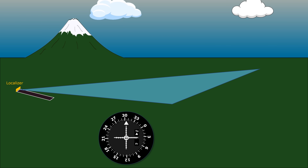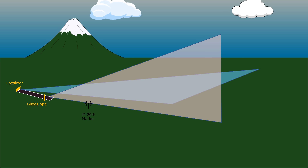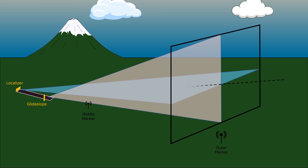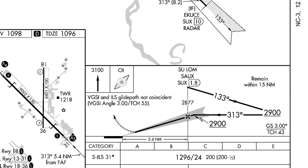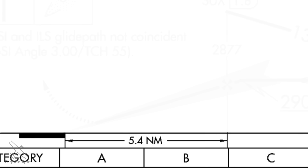The ILS uses highly directional radio transmitters on the ground to provide an approach path for exact alignment on an aircraft's descent to land. Let's talk about how the ILS works by looking at an example. This is the approach chart, or plate, that the FAA publishes for the ILS approach to Runway 31 in Sioux City, Iowa. We won't get into all the details of the approach plate in this video — we just want to visualize the approach and how the ILS works.